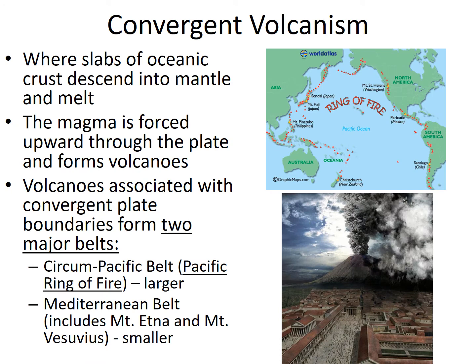Convergent volcanism is where slabs of oceanic crust descend into the mantle and melt. That magma is then forced up and forms volcanoes. This happens in two major belts: the Circum-Pacific Belt or Pacific Ring of Fire, and the Mediterranean Belt, where we see Mount Vesuvius and Mount Etna. Mount Vesuvius is the mountain next to Pompeii that covered it in volcanic ash — very famous.